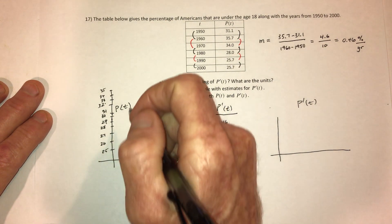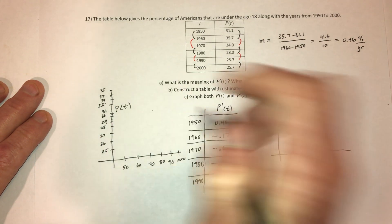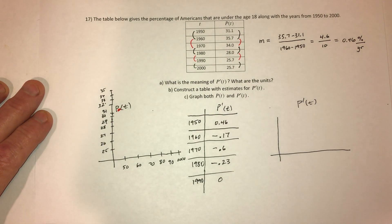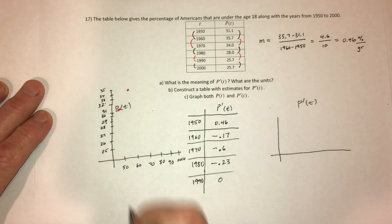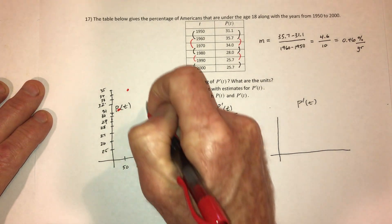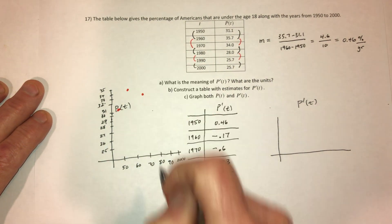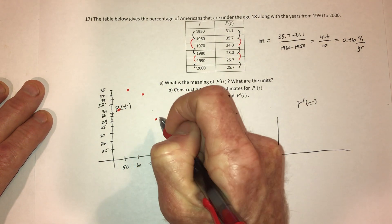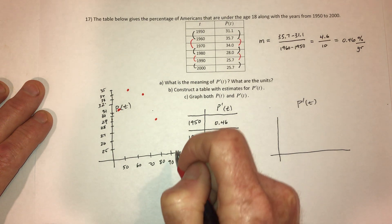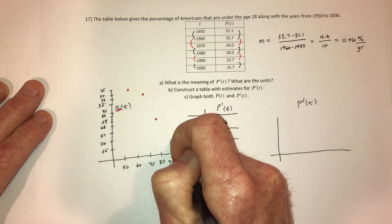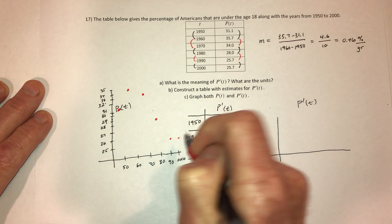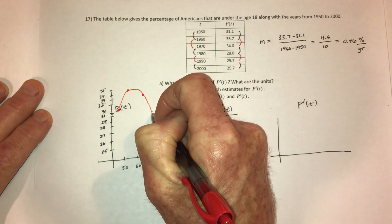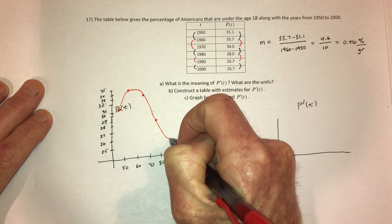Okay, so 31.1. P is right in the way. And then 35.7 and then 34 and then down to 28, then 25.7 and 25.7. So the graph looks about like this. And then this flattens out.